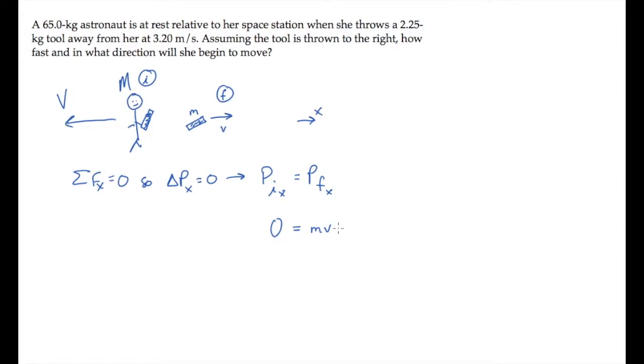The astronaut we've drawn moving to the left. That's in the negative direction, so mass times velocity with a negative sign. Solve this for capital V, the astronaut's recoil speed. It's the ratio of the masses times the tool's speed off to the right.